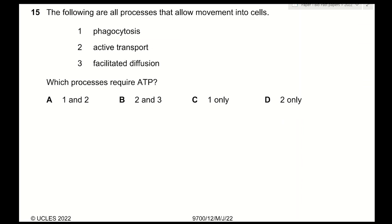Question 15: which processes that allow movement into cells require ATP? 1 — phagocytosis: a form of endocytosis where movement of vesicles requires ATP — correct. 2 — active transport: pumping substances against concentration gradients requires ATP — correct. 3 — facilitated diffusion: a passive process that does not require ATP, as substances diffuse through transport proteins — incorrect. The correct answer is A (phagocytosis and active transport only).